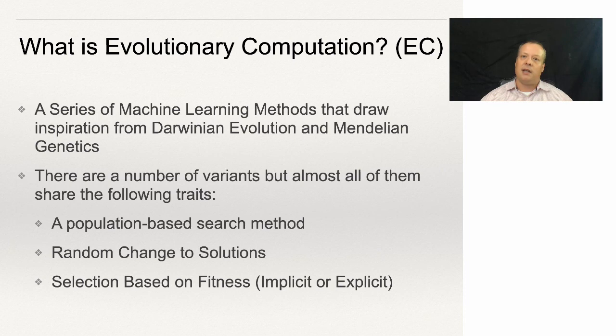And that fitness could be implicit. And by that we mean, it could be that they're competing against each other, the solutions are to solve the problem, or explicit, where there is a function that is given by some explicit argument as to which solution is doing the best.